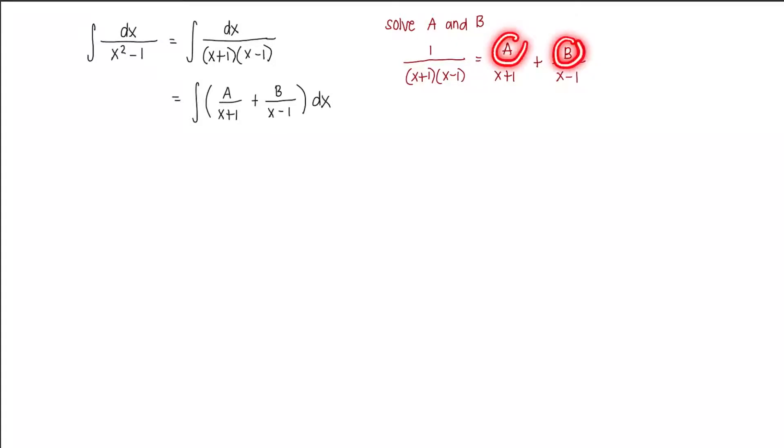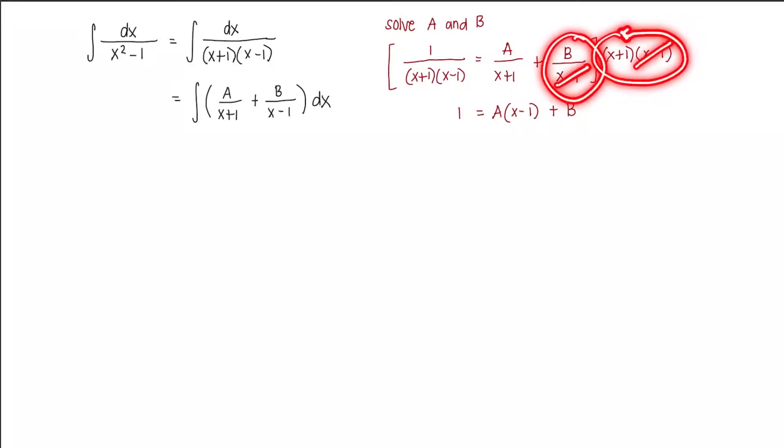Take note that we are looking for the values of a and b here. Now, let's try to get rid of the fraction by multiplying both sides by the denominator, x plus 1 times x minus 1. When we multiply, the denominator will be cancelled. So what's left on the left side is 1. When we multiply a over x plus 1 times x plus 1 times x minus 1, we cancel x plus 1. So what's left is a times x minus 1 plus b. And then we multiply this times x plus 1 times x minus 1 and cancel out x minus 1, so what's left is x plus 1.